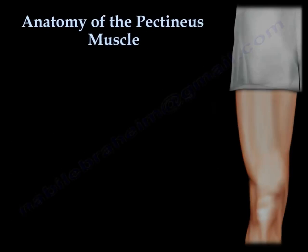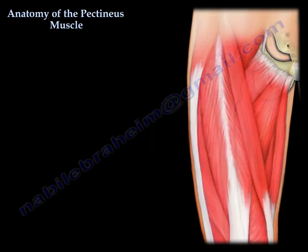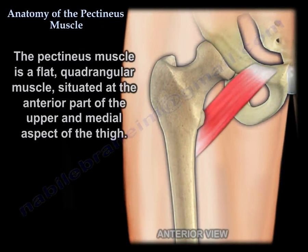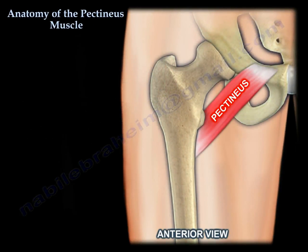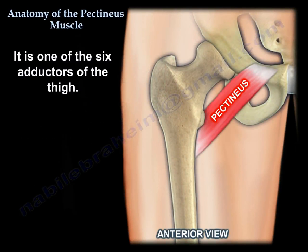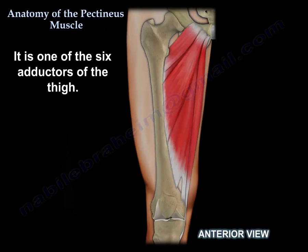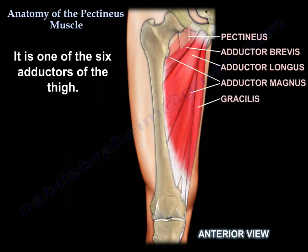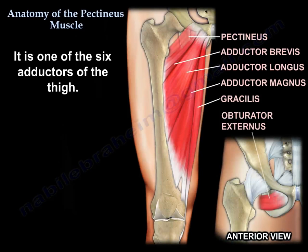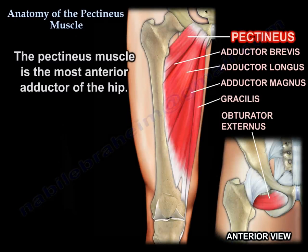Anatomy of the pectineus muscle. The pectineus muscle is a flat quadrangular muscle situated at the anterior part of the upper and medial aspect of the thigh. It is one of the six adductors of the thigh — you can see here the diagrams of the six adductors of the thigh. The pectineus muscle is the most anterior adductor of the hip.